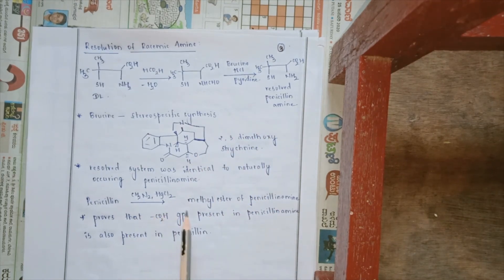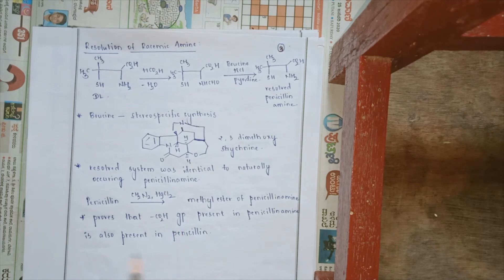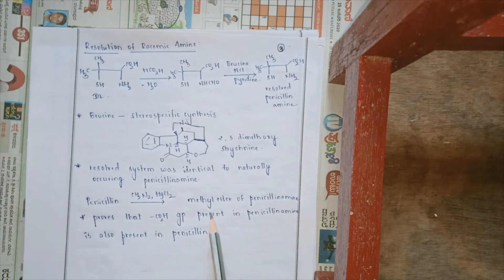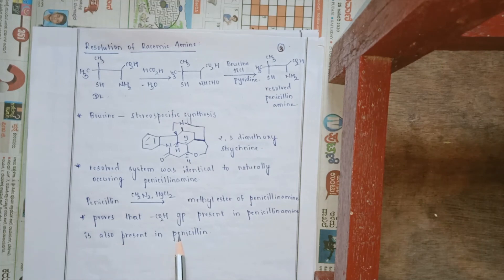This resolved penicillin amine system was found to be identical to the naturally occurring system. Furthermore, when penicillin reacts with diazomethane in the presence of mercuric chloride, there is synthesis of the methyl ester of penicillin amine. This proves that a carboxylic group is present in penicillin amine, and the same carboxylic group is also present in penicillin.